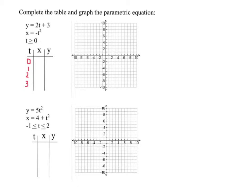So the x component is negative t squared, while negative 0 squared is 0. Negative 1 squared is negative 1. Negative 2 squared is negative 4. And negative 3 squared is negative 9.